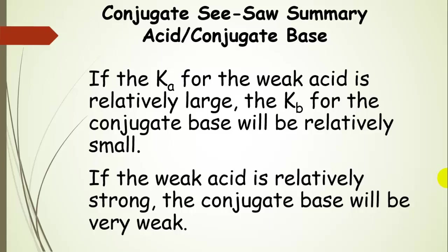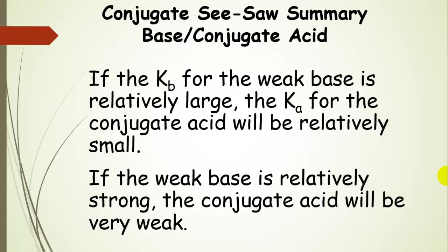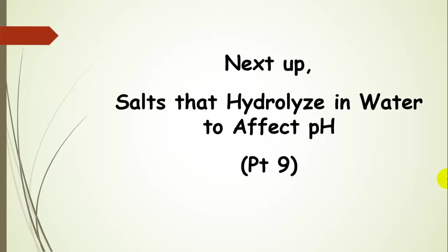To summarize: if the Ka for the weak acid is relatively large, the Kb for the conjugate base will be small — if the weak acid is relatively strong, its conjugate base is very weak. That's the conjugate seesaw for acids. For bases, the same principle applies: if the Kb for the weak base is relatively large, the Ka for the conjugate acid will be small, and if the weak base is relatively strong, the conjugate acid is quite wimpy. Larger Kb means smaller Ka. Next we'll talk about salts that hydrolyze in water and affect pH.